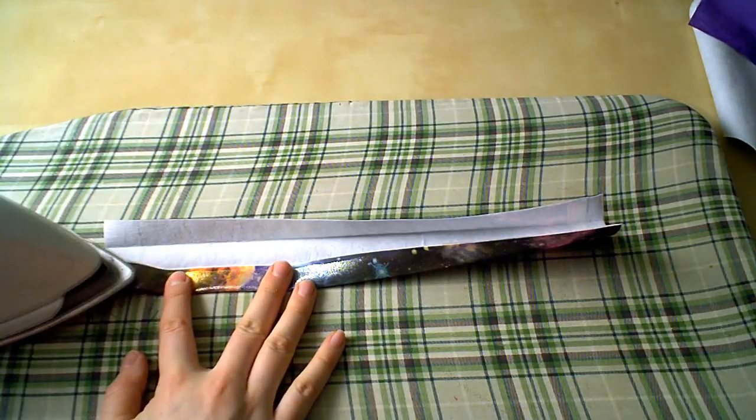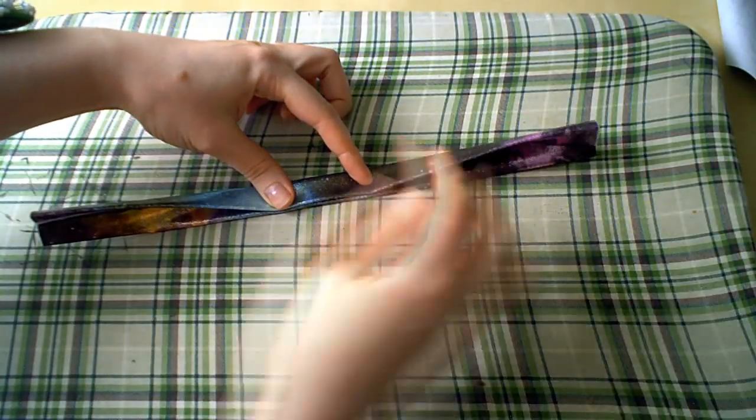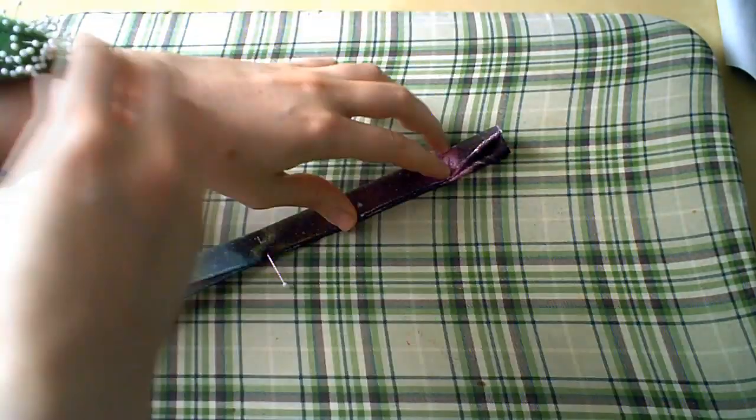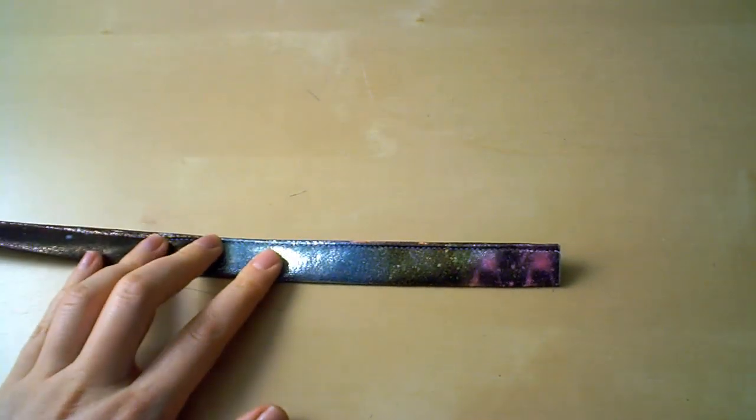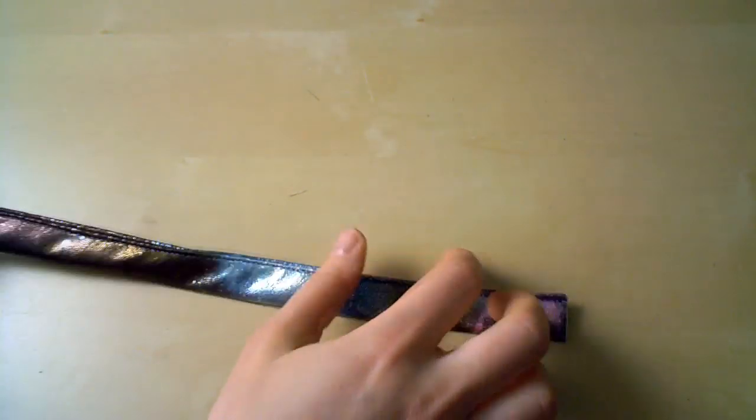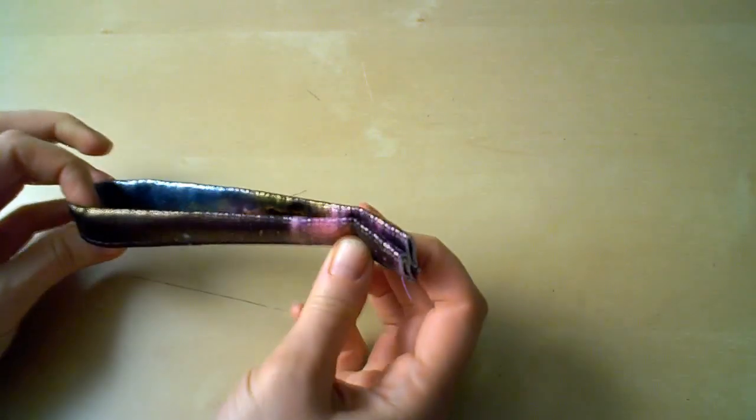After that, we repeat for the other side. Fold to the center and press. Now we fold the strap down the original center fold line so the raw edges are completely encapsulated. Then we pin. Sew the edge closed using a straight stitch about 1/8 inch from the edge. Fold the finished strap in half and secure with a pin.